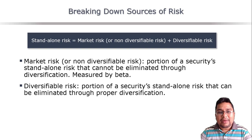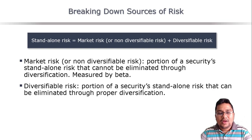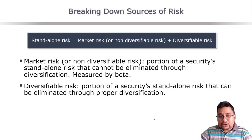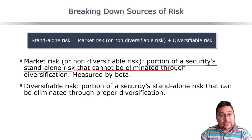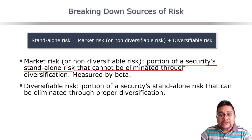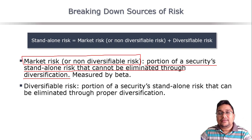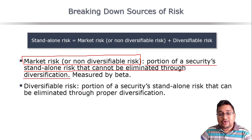This is why big investors, mutual funds, and large companies invest in multiple assets, businesses, and securities to reduce diversifiable risk. The market risk is the portion of a security's standalone risk — the total risk when you invest only in that security — that cannot be eliminated through diversification. Diversifiable or unsystematic risk is the portion that can be eliminated through proper diversification.